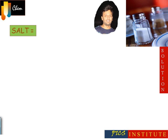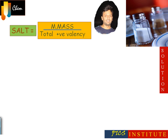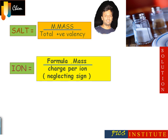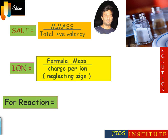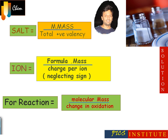For a salt, equivalent mass is equal to molecular mass divided by total positive valency. For an ion, equivalent mass is equal to formula mass divided by charge per ion, neglecting the sign. For a reaction, equivalent mass of a species is equal to molecular mass divided by change in oxidation number. Remember, any element or compound has a fixed molecular mass, but it can have a variable equivalent mass depending on the reaction and change in oxidation number.